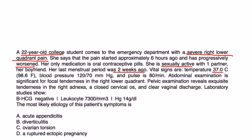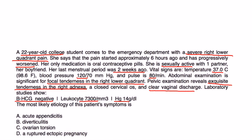Temperature is 37, blood pressure 120, pulse 80. Abdomen exam is significant for focal tenderness in the right lower quadrant. Pelvic exam reveals exquisite tenderness in the right adnexa, a closed cervical os, and clear vaginal discharge. Lab studies show beta-hCG is negative, leukocyte count is normal, and hemoglobin is normal. What is the most likely etiology of the patient's symptoms?